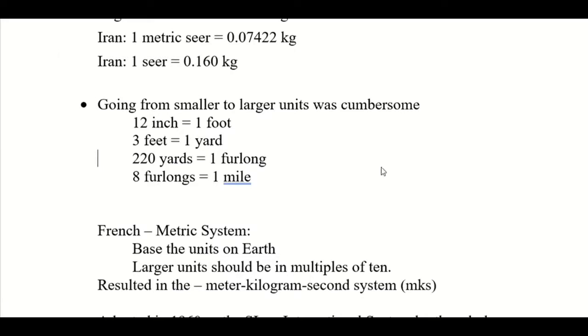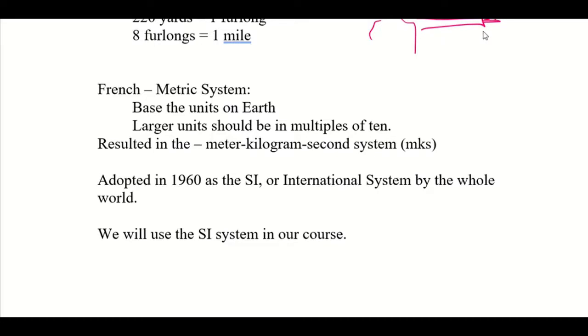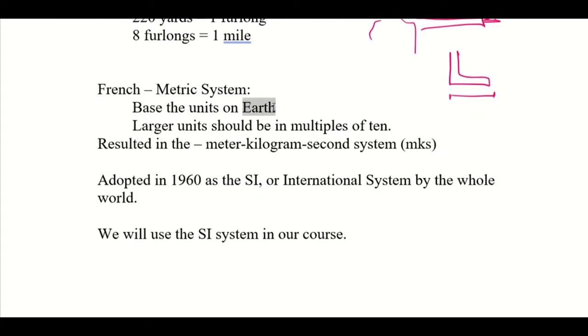Another reason for this was that the yard was defined by the king of England. He would stand up with his arm outstretched and said the distance from his nose to the tip of his finger is one yard. The king of England is no longer there, so we don't know if we're still in the same yard. The foot also was the foot of a French king - he put his foot on the table and said, measure this length and that is one foot. They thought it should be based on the earth, something to do with nature rather than people.